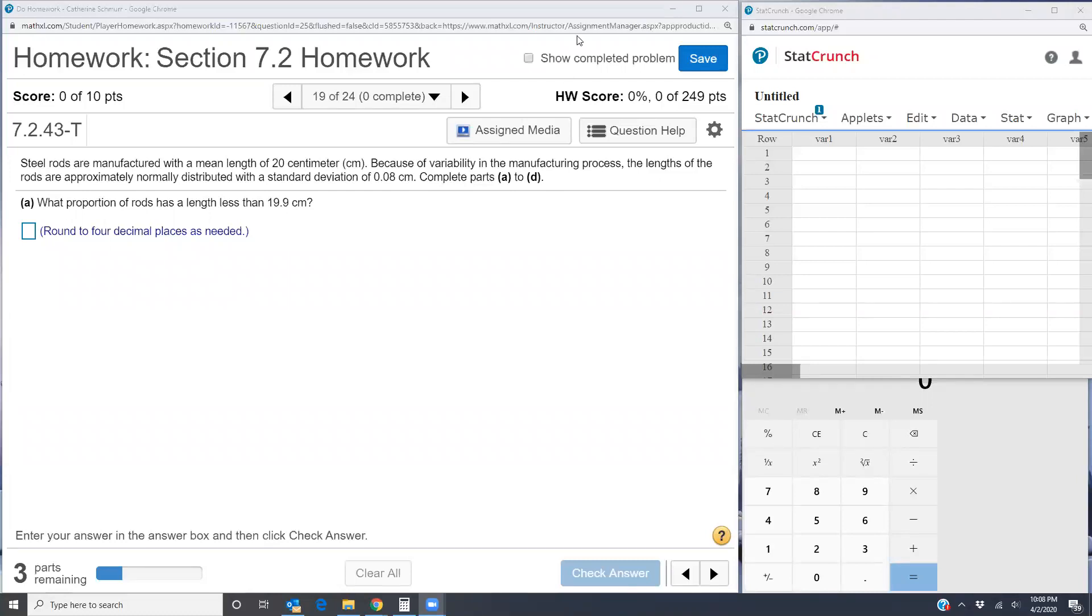There are a couple key things that we were told here. One of them is that we have a normal distribution, approximately normally distributed. We're told that the mean length is 20 centimeters and the standard deviation is 0.08 centimeters.